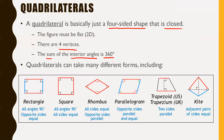Remember with triangles it was only 180 degrees. With quadrilaterals, just the additional side actually adds a full other 180 degrees to it, making it 360.